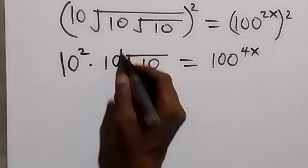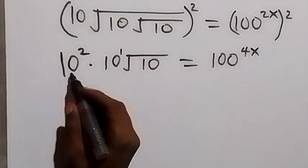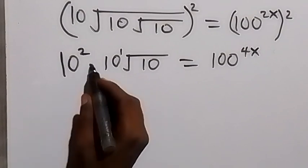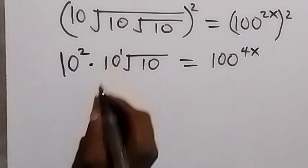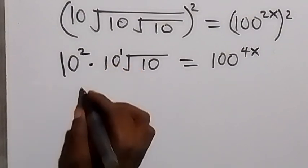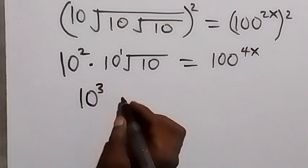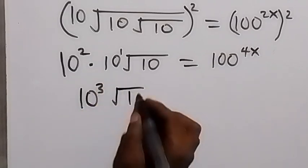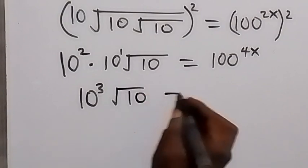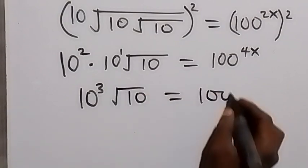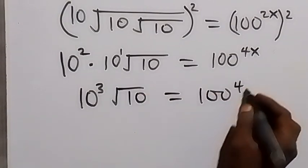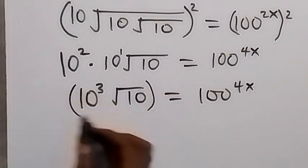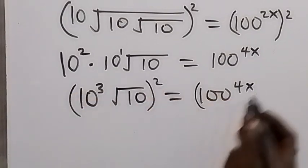In the next step we have 10 raised to power 2, then 10 raised to power 1. From the law of indices, same base multiplying — we can add the powers — and this will be 10 raised to power 3, then multiply by root 10, root 10, which is equal to 100 raised to power 4x.